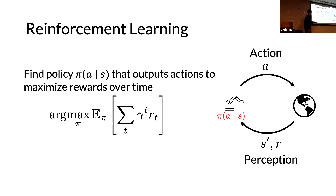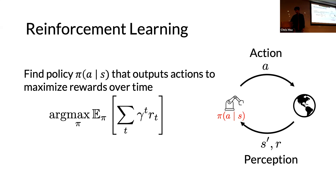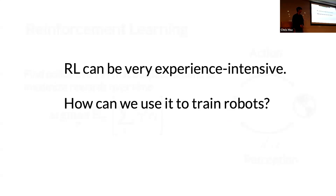The policy outputs actions to maximize the reward signal. Where the policy fits in the perception-action loop is as the robot's decision-making component: it takes state S as input and outputs action A. The problem with RL is that it's very experience-intensive — RL theory says the number of samples needed to get an optimal policy scales exponentially with the state-action space. Given that robots are slow to collect data, the key question is: how can we actually use RL to train robots?